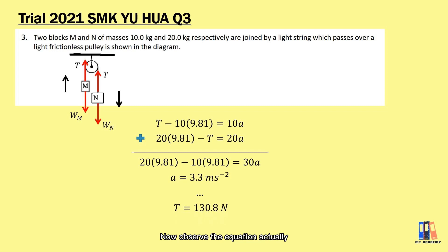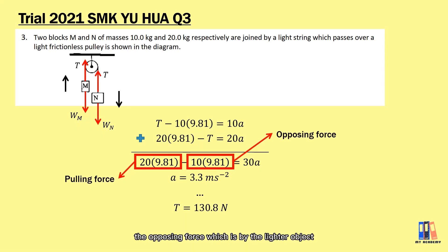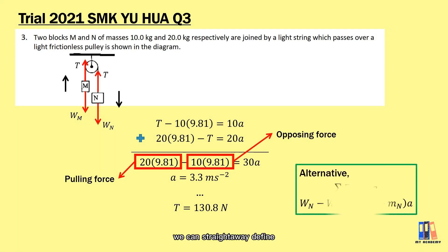Now, observe the equations. Actually, you can ignore the tension and do the overall calculations. Here is the pulling force by the heavier object minus the opposing force by the lighter object. You can imagine both trying to pull each other up, but in the end, the heavier object will pull the lighter object up while the heavier object is moving down. Through this observation, you can straight away define the equations without the tension: the weight of M minus the weight of m equals the total mass multiplied by acceleration.